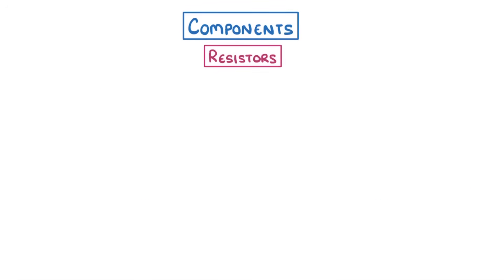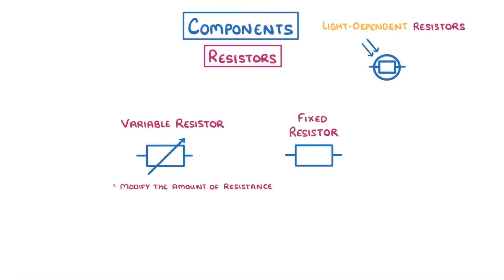Finally we have resistors of which there are a few types to know. Basic resistors can be fixed to provide a certain number of ohms worth of resistance or can be variable so that we can easily modify the amount of resistance they provide. Meanwhile light dependent resistors which we can call LDRs and thermistors are both a bit more complicated, so from now on we'll focus just on these two.